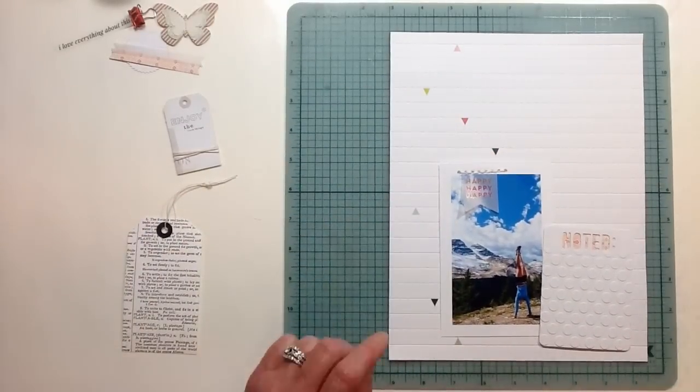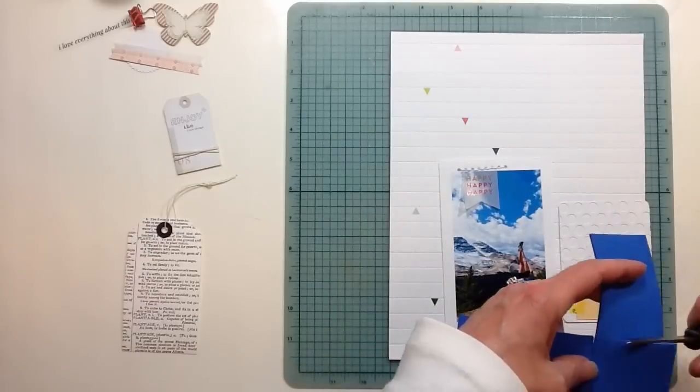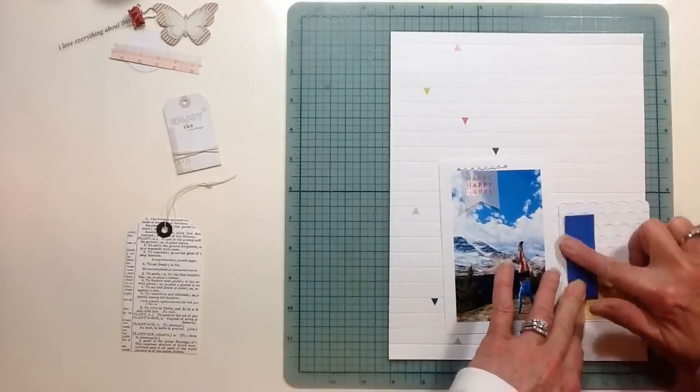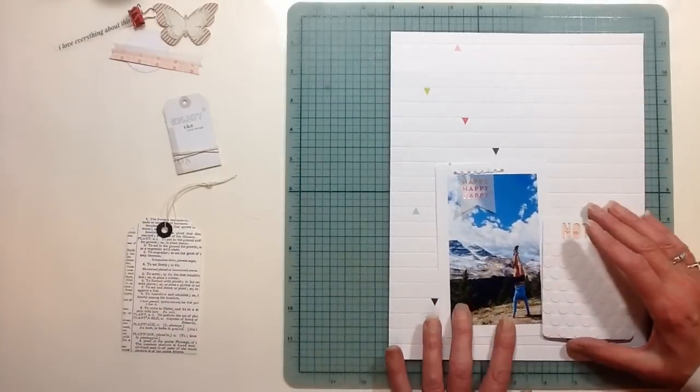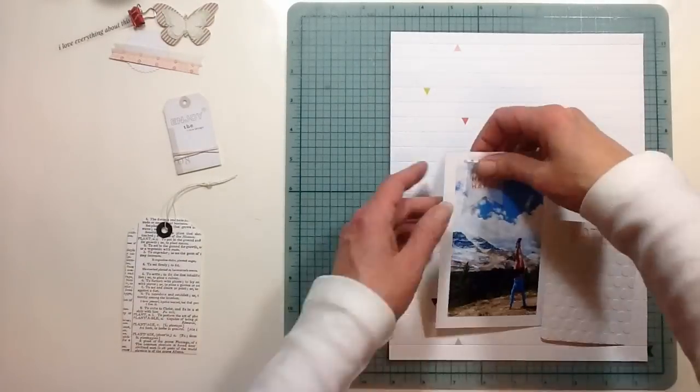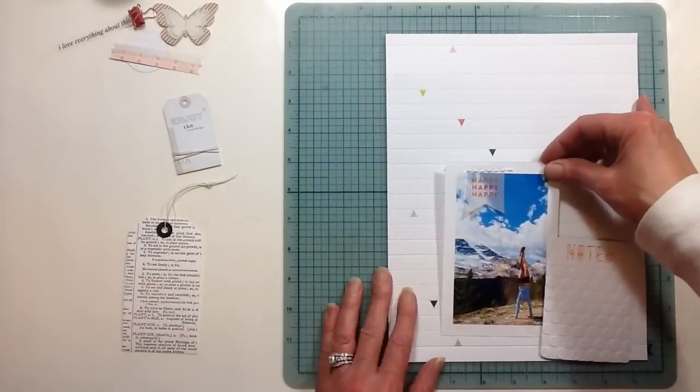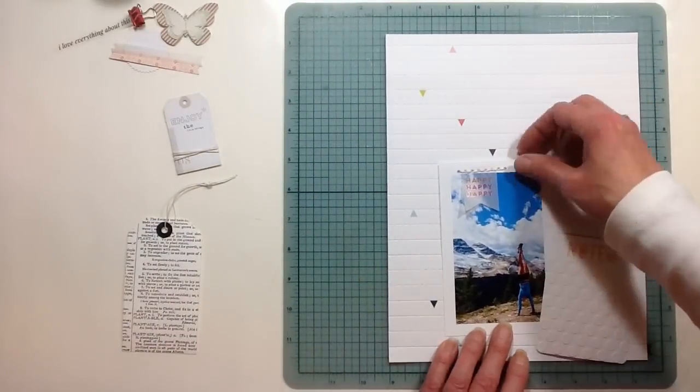I guess it's a placemat, not really a tag. I ran that through my Cuttlebug with a big polka dot shape. I just wanted more texture on the background paper as well.